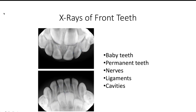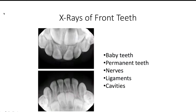And lastly, we will look for cavities. Cavities show up as dark shadows on the tooth, as you can see outlined here. If we take an x-ray of your child's front teeth, we will always discuss all these findings with you at your child's visit.